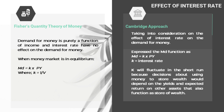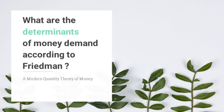The Cambridge approach, however, takes into consideration the effect of interest rates on the demand for money. Cambridge economists express the money demand function as Md equals k times PY, which looks identical to Fisher's, but the k here represents interest rate sensitivity, making a key difference. The k, or interest rate factor, will fluctuate in the short run because decisions about using money to store wealth depend on the yields and expected returns on other assets that also function as stores of wealth.